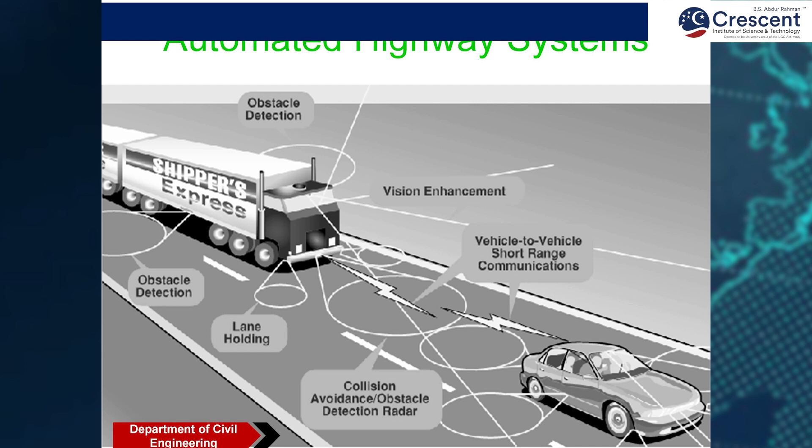The Automated Highway System enables vehicle-to-vehicle short-range communication within a highway. You can communicate with the vehicle moving in front or at the sides. The system also supports collision avoidance, obstacle detection radar, lane holding so a vehicle stays in its designated lane, and detection of obstacles coming close to the vehicle.